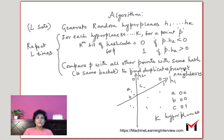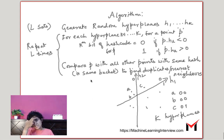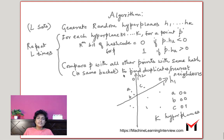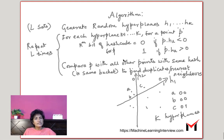Suppose we have a new point P and we want to find its nearest neighbors or most similar points. We find the hash value for P and then look at other points with the same hash value, or in the same bucket, to find duplicates or nearest neighbors. Since we have L different tables, we look for other points with matching hashes across all L tables. Let's look at this again with an example.